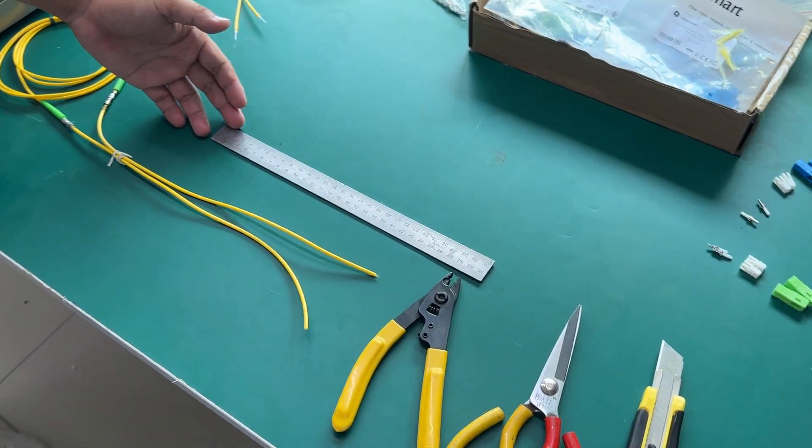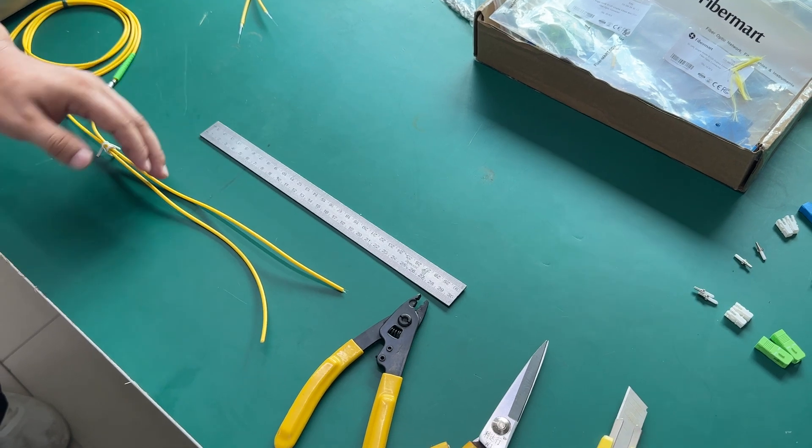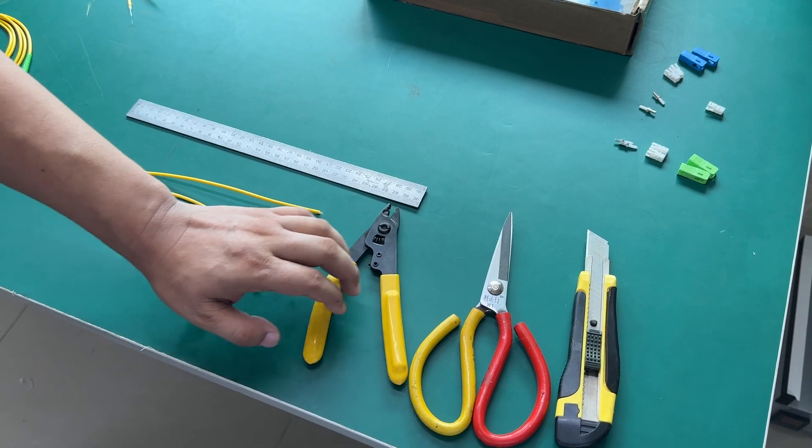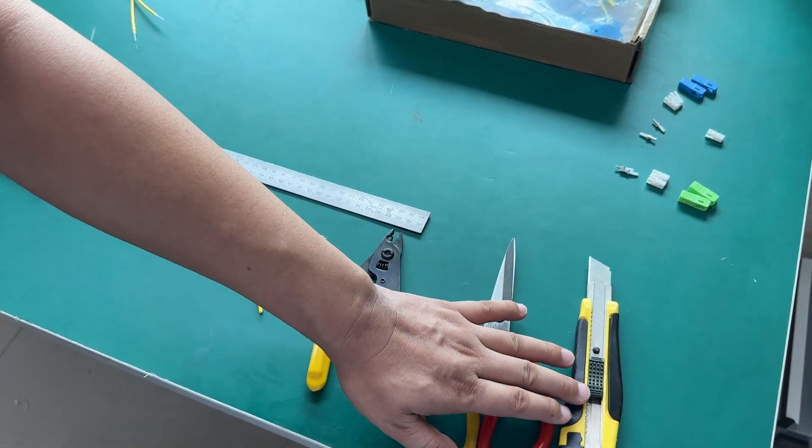First, this one is the ruler. This is the fiber optic cable material. This is the stripper. This is the scissors. And last, a knife.